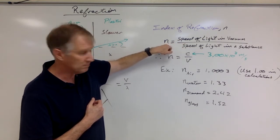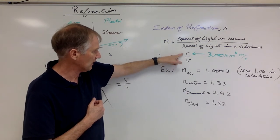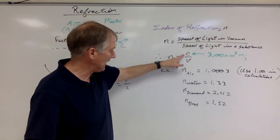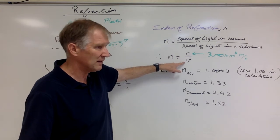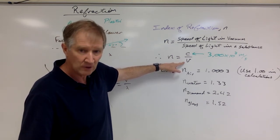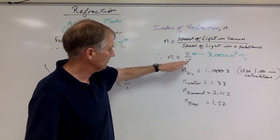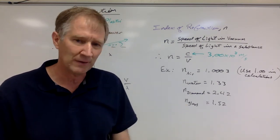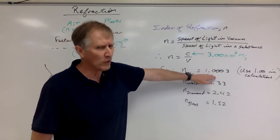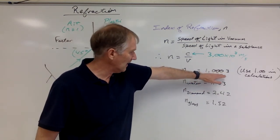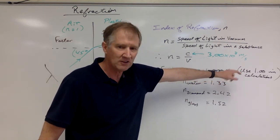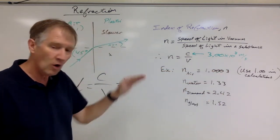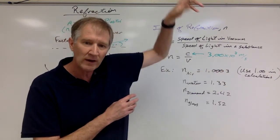The index equals one for a vacuum — C divided by C — and is always greater than or equal to one, because the denominator (speed in the substance) can never exceed the numerator (speed in vacuum). For air, you need to go out to five significant figures to get anything other than 1.000, so in calculations just use n = 1 for air.